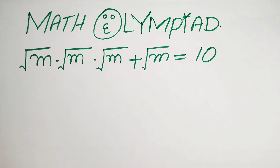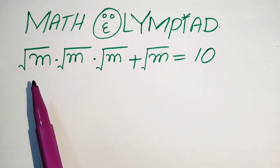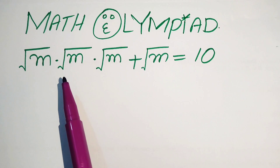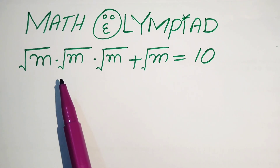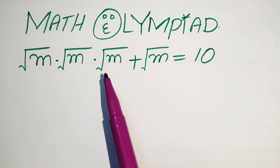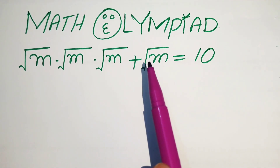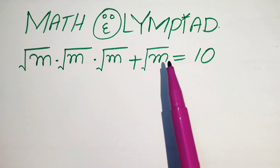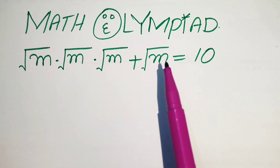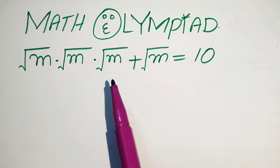Hello everyone, welcome. We are going to solve this math algebra problem. Here we have the square root of m, times the square root of m, times the square root of m, plus the square root of m, equals 10. We will solve this problem for the values of m.